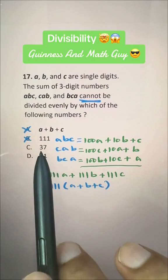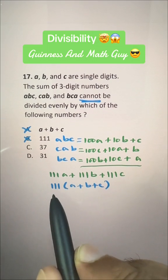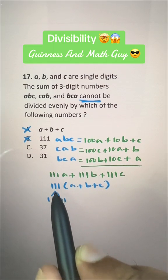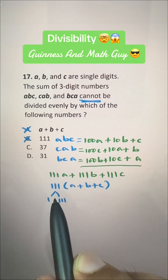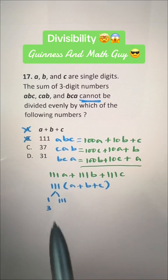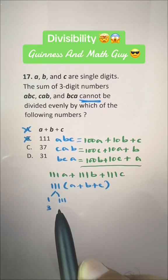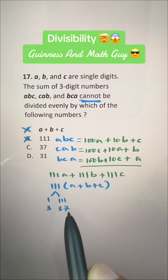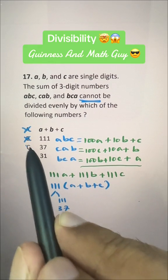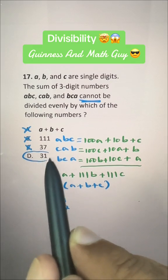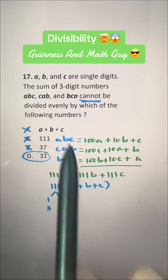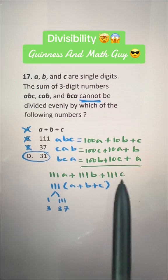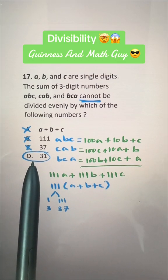We are now left with 37 and 31. If we take the factors of 111: 1 times 111 is 111, it's not divisible by 2 because it is not even. Let's try 3: 3 times 3 is 9, we are left with 21, and 3 times 7 is 21. So 37 is a factor of 111 — this cannot be our answer. Our answer is 31. 31 cannot be a factor of 111(A plus B plus C), so this big number cannot be divided evenly by 31.